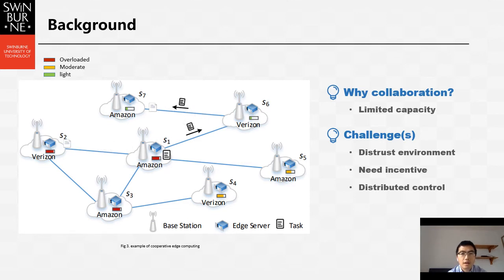Luckily, edge servers are connected with high-speed links, so they can offload their computation tasks to adjacent edge servers. For example, in the picture, the edge server at S1 is overloaded, so it can offload some of its computation tasks to S5, S6, S7, or S4. This is called cooperative edge computing.